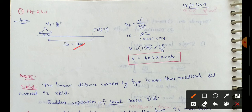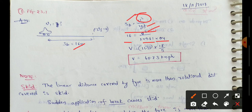Using the formula: sb = v² / (2 × g × f), where g = 9.81 and f = 0.4. Substituting the values and simplifying, the speed of the vehicle comes out to 40.73 kmph.